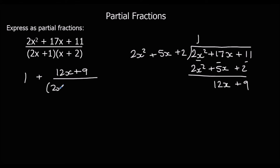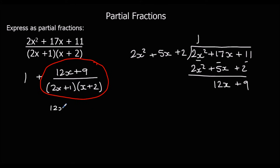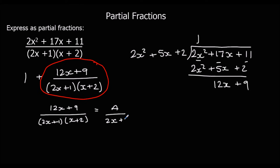So we've got 1 on the outside, with 12x + 9 as the remainder over the unchanged denominator. We're going to ignore the 1 and split the fraction part into partial fractions: (12x + 9) over (2x + 1)(x + 2) equals A over (2x + 1) plus B over (x + 2).